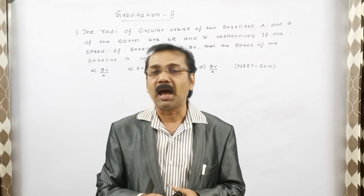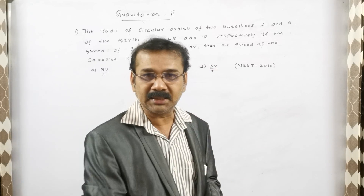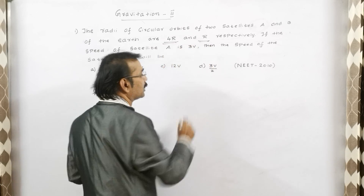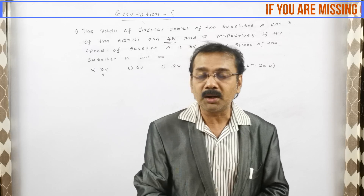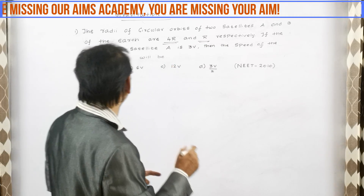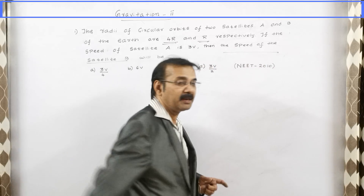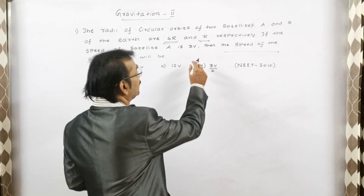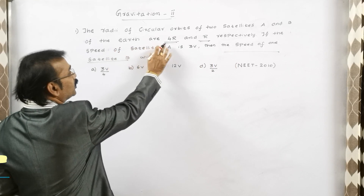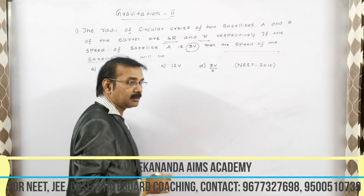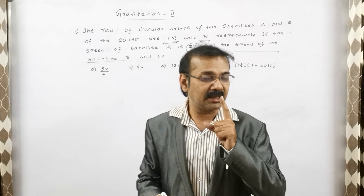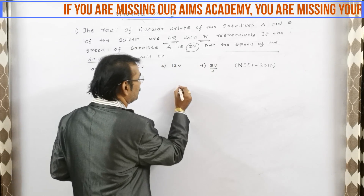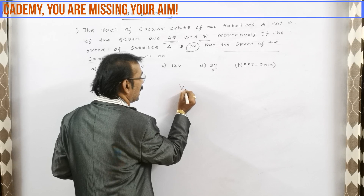Without using any formula and without using any concept, we are going to solve this in a simple step. The important point: two radii are given — 4r and r. They are asking for the speed of satellite B, and the speed of satellite A is given as 3p. So one velocity is given and two radii are given; we need to find the velocity of B.